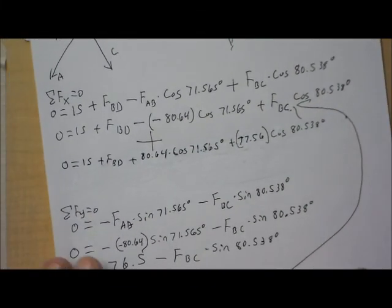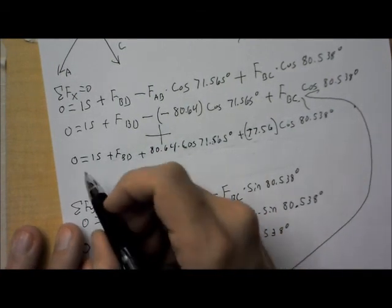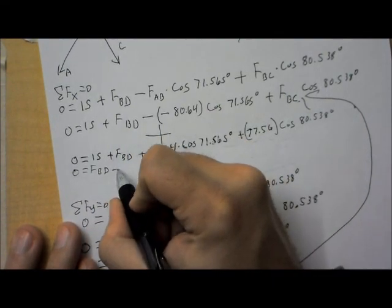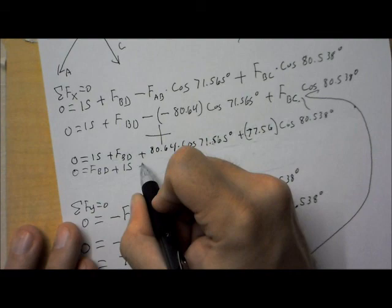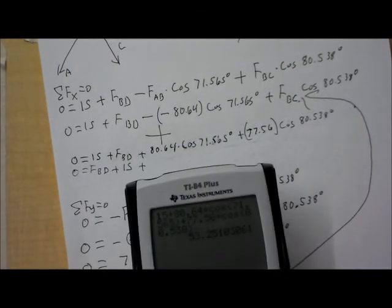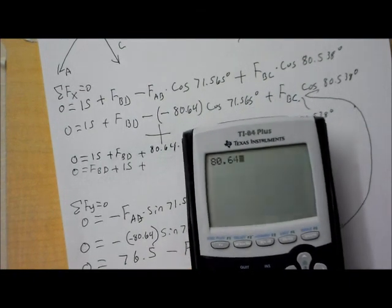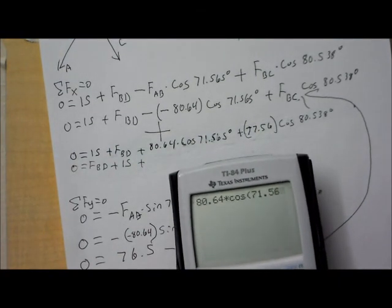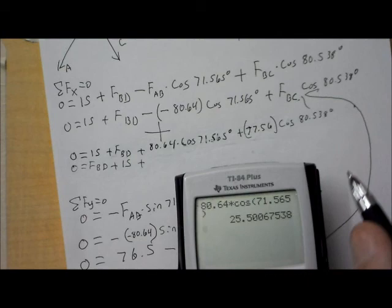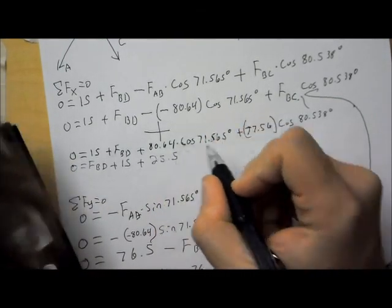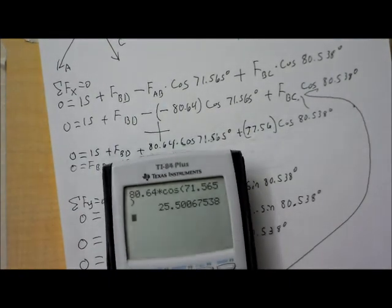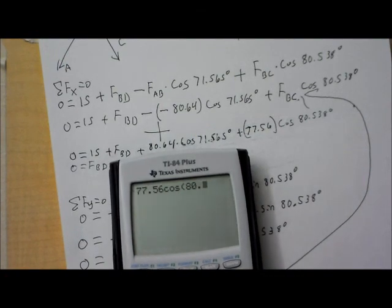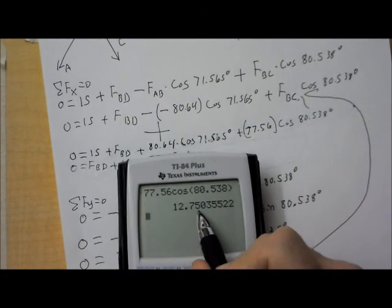Okay. So, when we plug the force of BC back in, we get 0 equals 15 plus FBD. We still don't know that one. Plus 80.64. You could leave it as minus negative if you really wanted to. So, FBC times cosine 71.565 degrees. Plus, now we know FBC is 77.56. So, plus 77.56 times cosine 80.538 degrees. Okay. So, maybe I'll move FBD over. So, it's in that very first position. And then I have plus 15. Let's figure out what each of these is. Plus, and we'll do 80.64 times cosine 71.565. And I get 25.5. And then over here, plus, I'll type that in, 77.56 times cosine 80.538. And I get 12.75.